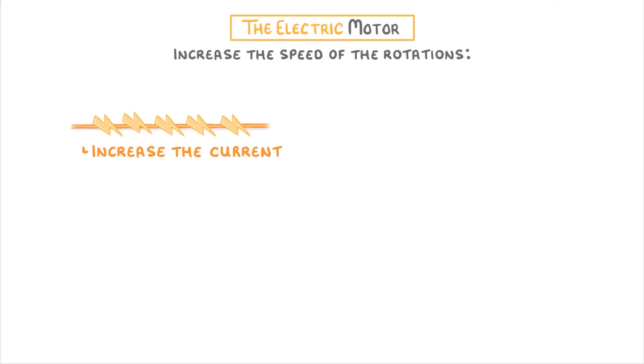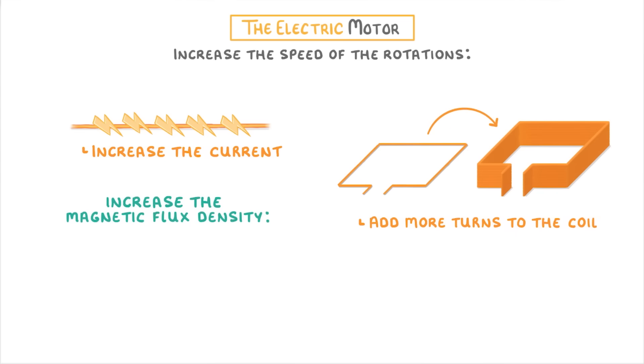One is to increase the current that's passing through the wire. Two is to add more turns to the coil. And third, we can increase the magnetic flux density, by using more powerful magnets.